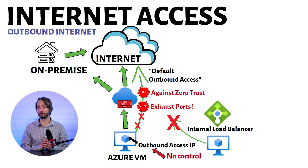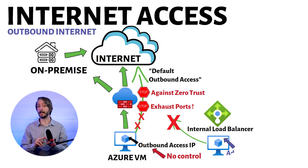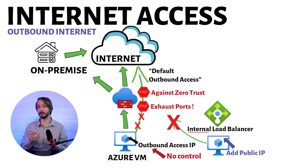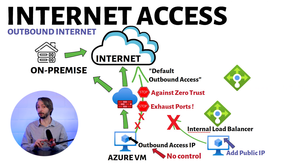One of the biggest problems with the default outbound access shows up when you deploy an internal load balancer. Setting up virtual machines behind an internal load balancer does not allow them to access the internet without any other configuration. For that setup, we actually have three ways to work around the problem.